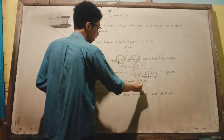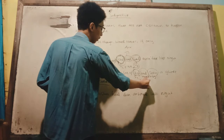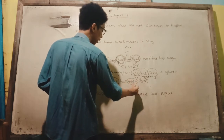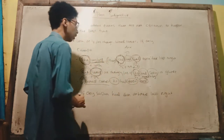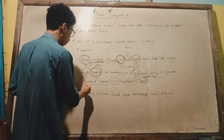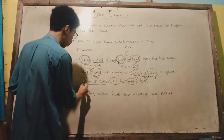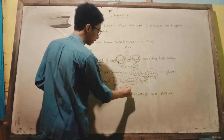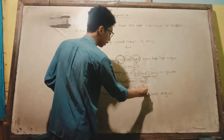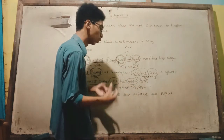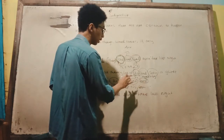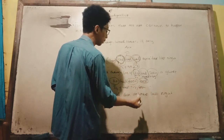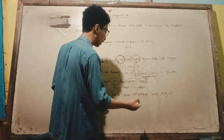Because here I want to explain about an adverb of place, I use 'being,' where 'been' is the verb three form of 'be.' The pattern for 'would rather' is: first subject + would rather + second subject + had + verb three or being. If you want to explain about an action or activity, use verb three; if you want to explain about a place, adjective, or similar, use 'being.'